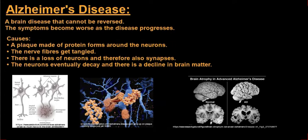Probably the most well-known of the central nervous system disorders is Alzheimer's disease, and it is a brain disease that cannot be reversed. So once it starts, there's really no going back, and as it progresses, the symptoms will become worse.